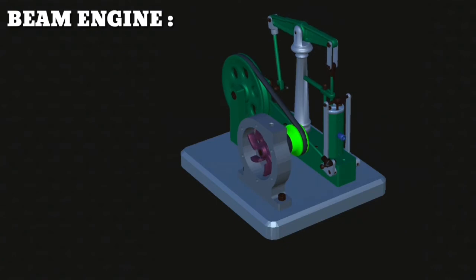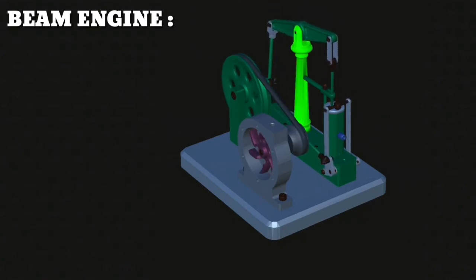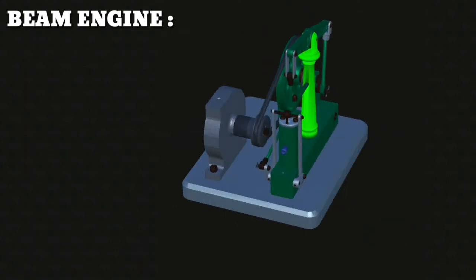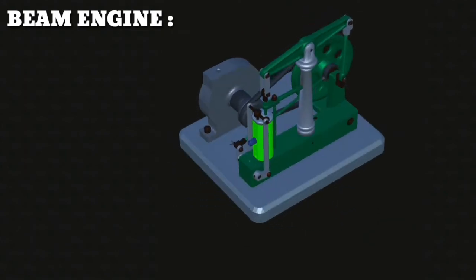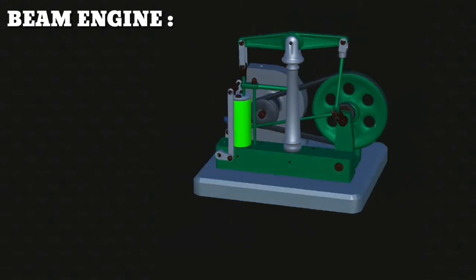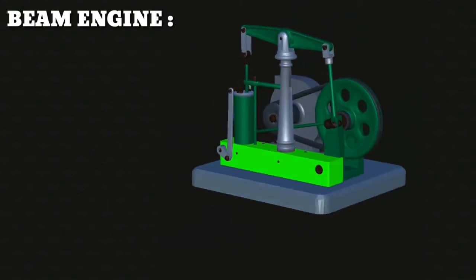Working: As the crank starts rotating, this motion is transmitted to the lever by the connecting rod. As the crank continues to rotate, the lever starts to oscillate about a point. This oscillatory motion is transmitted to the piston and cylinder.